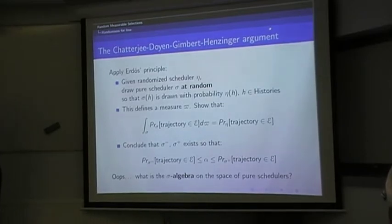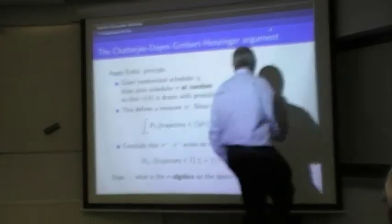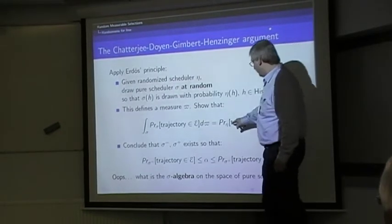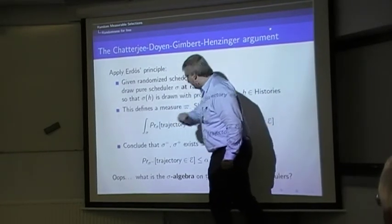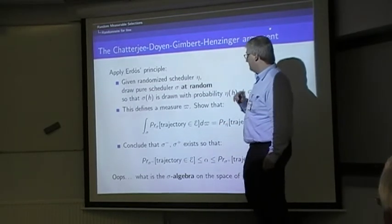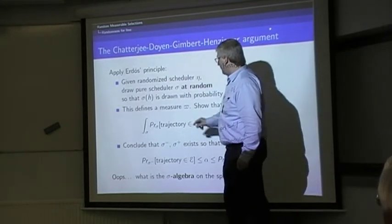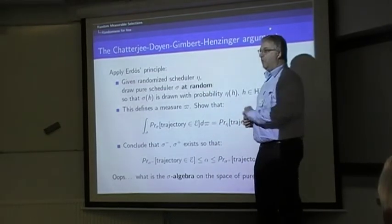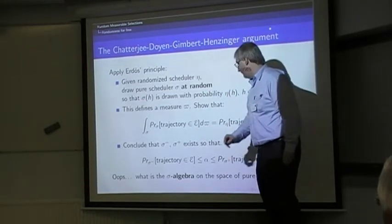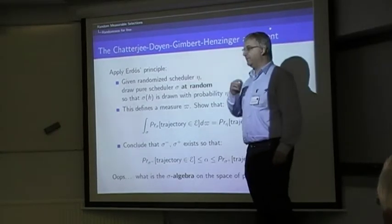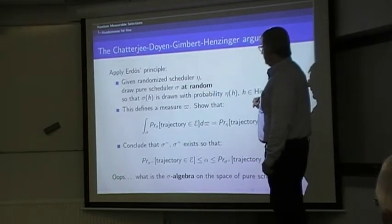This defines a measure on schedulers, on pure schedulers, and then you can show that the probability that the trajectory falls into the required set according to the randomized scheduler is the average of the probabilities over pure schedulers when you draw these pure schedulers according to that measure. The nice thing is that you know that now, if you've got an average over sigma of something that is equal to alpha, then for one of the values of sigma you get a value which is under alpha, and for another one you get a value above alpha, and so this will give you the desired result. The only problem with this approach, which is not at all a problem in the finite case, is to define the sigma algebra on the set of schedulers.